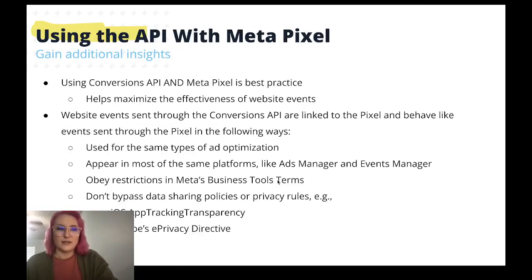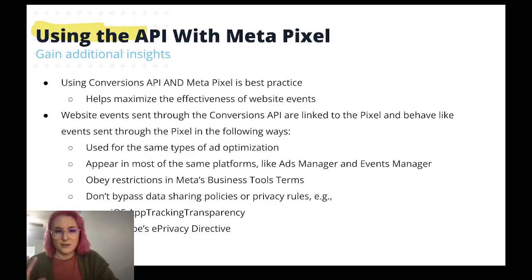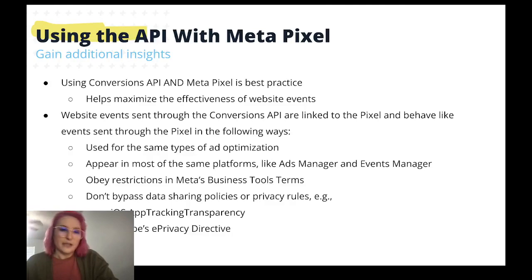When using the API with Meta Pixel — which is really how you should be doing it, as that's best practice — it helps maximize the effectiveness of website events. These events are sent through the Conversions API and, as that graphic showed, are linked to the pixel and behave like events set through the pixel in these ways: they're used for the same types of ad optimization, they appear in most of the same platforms like Ads Manager and Events Manager, they still obey the same restrictions in Meta's business tool terms, and they do not directly bypass data sharing policies or privacy rules set out in things like iOS App Tracking Transparency or Europe's e-privacy directive.